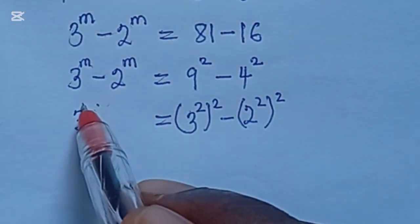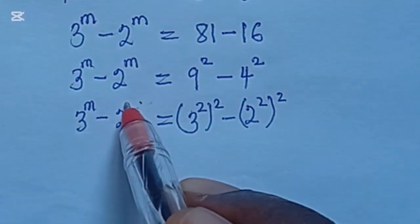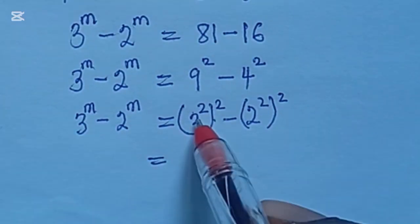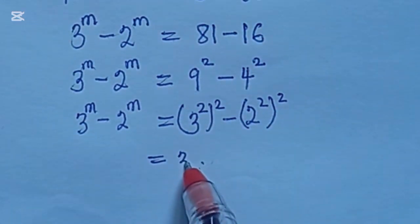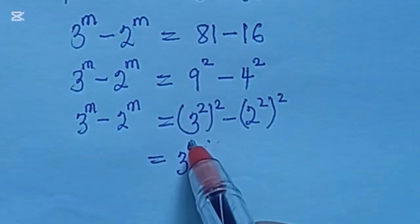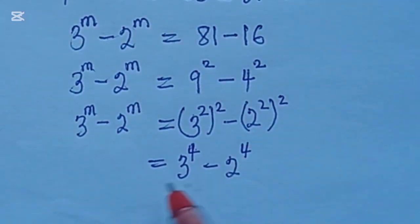As you can see, we can write it in the form of the left-hand side, alright? So on the right-hand side, we get 2 times 2 gives us 4. So this becomes 3 to the power of 4 minus 2 to the power of 4.